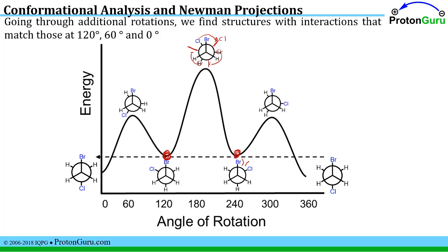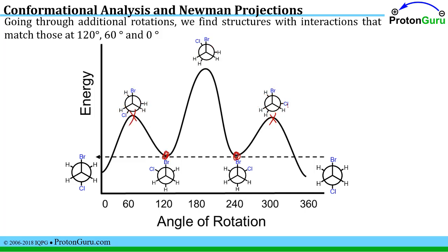If we rotate the chlorine down to be behind a hydrogen, we reach another eclipsed conformation where chlorine eclipses a hydrogen, bromine eclipses a hydrogen, and hydrogen eclipses hydrogen. Looking at those repulsive interactions — chlorine-hydrogen, bromine-hydrogen, hydrogen-hydrogen — they are the same as in the first eclipsed conformation, so the energy should be at the same height. Finally, rotating the chlorine anti to the bromine again brings us back to the start. A 360-degree rotation takes you all the way back to your starting point, so that energy is the same.